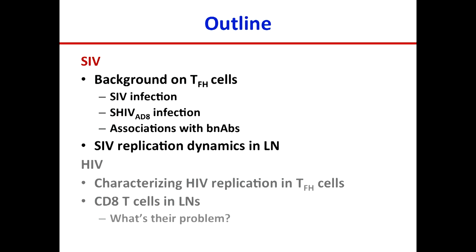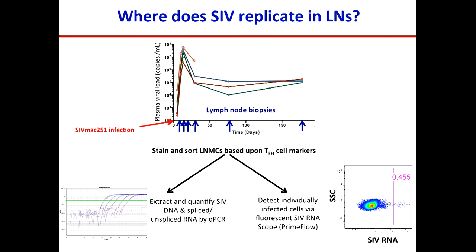Let me tell you a little story about SIV replication dynamics in the lymph node. SIV is leading to changes in T follicular helper cell populations, but where is it actually replicating? Eva Archer, a graduate student in my group, took four rhesus macaques, infected them with SIV-MAC-251, and took lymph node biopsies at multiple time points — always three or four lymph nodes per time point. She stained and sorted different lymph node mononuclear cell populations based on T follicular helper cell markers, then extracted and quantified SIV DNA and spliced and unspliced RNA by qPCR, and looked at individually infected cells by SIV RNA scope.